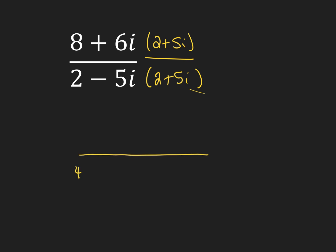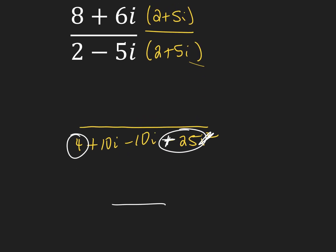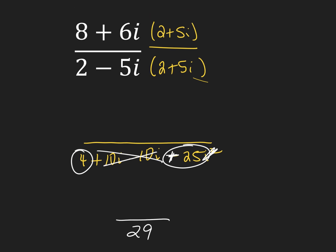I like to multiply the bottom first just to make sure my i's cancel out. So 2 times 2 is 4. 2 times 5i is plus 10i. Negative 5i and 2 is minus 10i. And negative 5i and positive 5i is negative 25i squared. We see that i squared, so we cross it off and change the sign. So I have 4 plus 25 gives me 29. And our i's canceled out, which is exactly what we needed to happen.